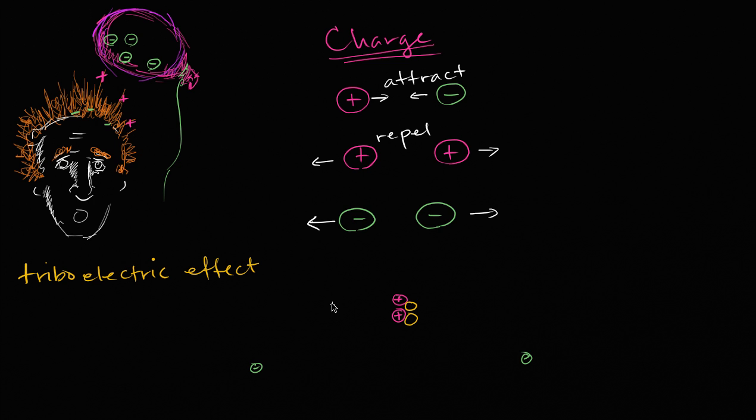But we like to quantify things. So we can start seeing how much they repel or how much they attract each other. And so the fundamental unit of charge, or one of the fundamental units of charge, or I guess you could say the elementary unit of charge, is defined in terms of the charge of a proton or an electron. So the elementary unit of charge is denoted by the letter e, and this is the charge of a proton. And this is e for elementary.